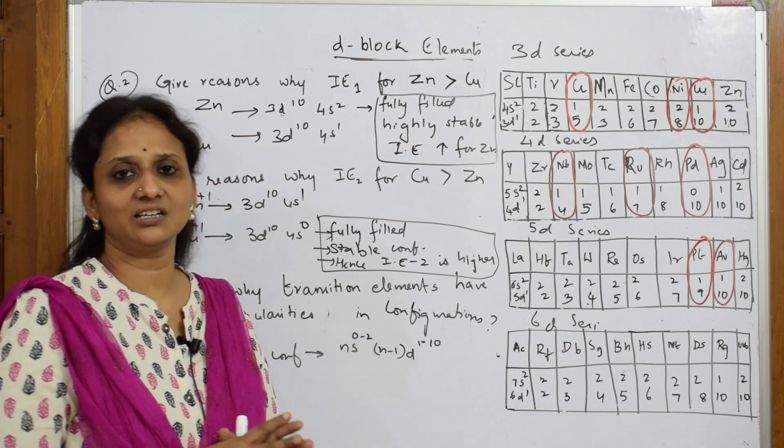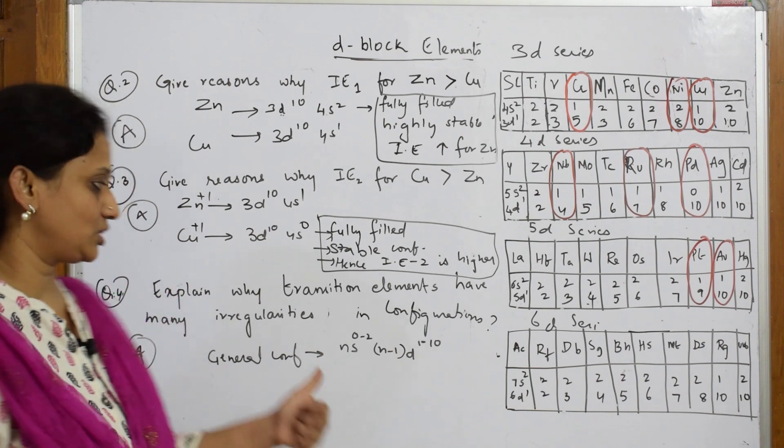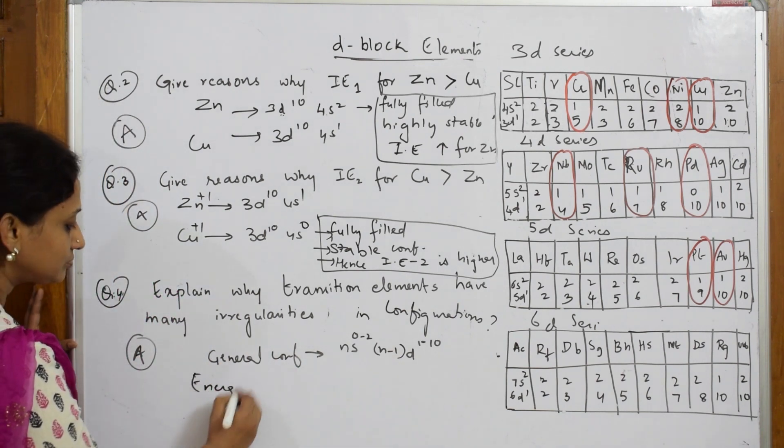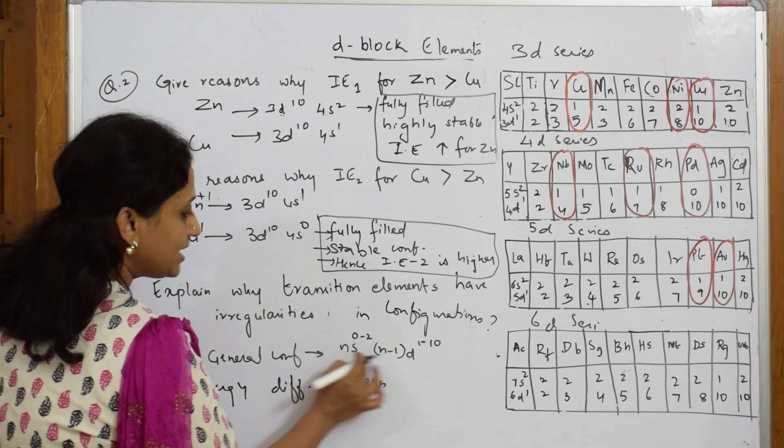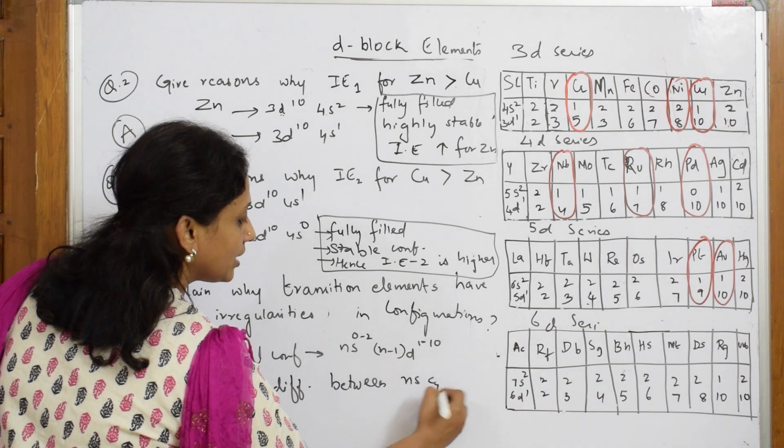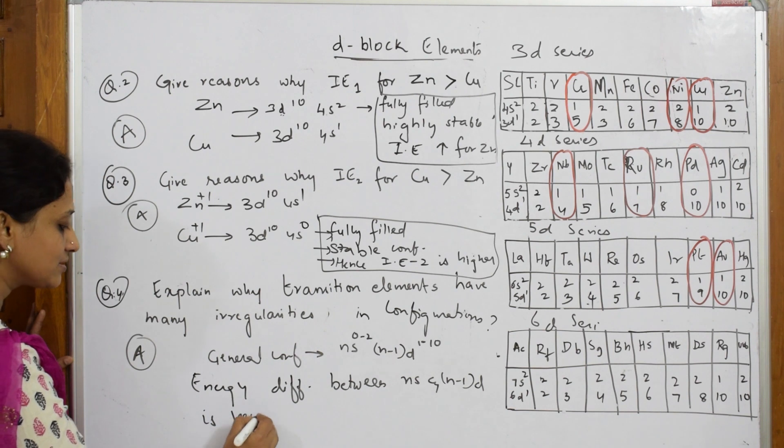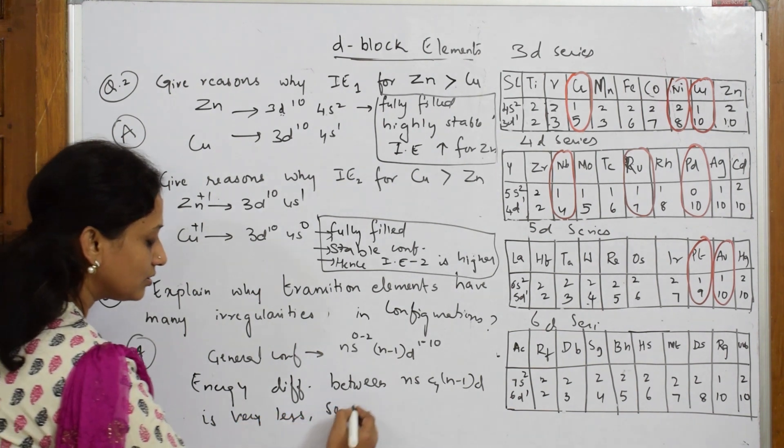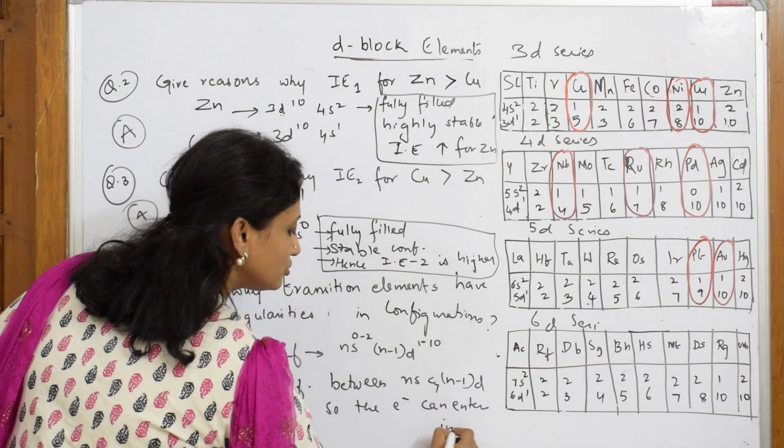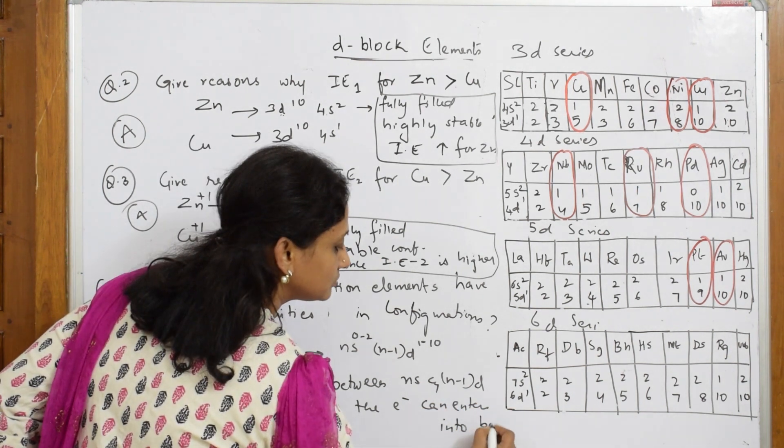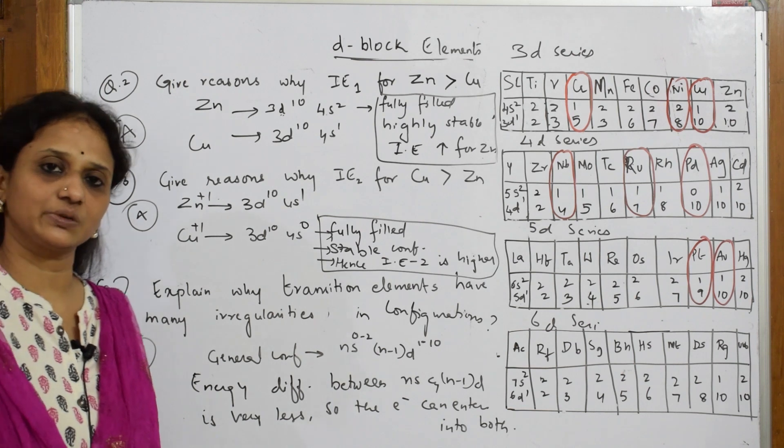So the difference of energy level is very less in d-block elements, so they show variable electronic configuration. Let us write: energy difference between ns and n minus 1 d is very less. So the electron can enter into both. Hence they show variable electronic configuration. Hope you understood. Let us meet again next question.